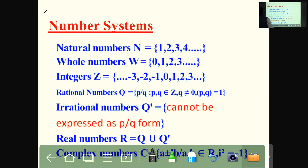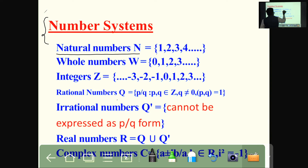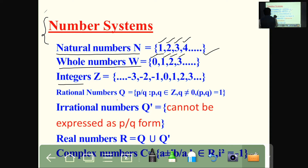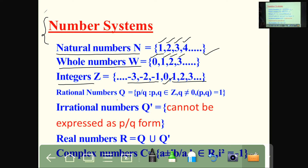For this we need to know what are the number systems. You know very well what are the natural numbers: 1, 2, 3, 4, like this. What are the whole numbers? 0, 1, 2, 3, etc. What are the integers? Positive numbers, negative numbers including 0. These are the integers.